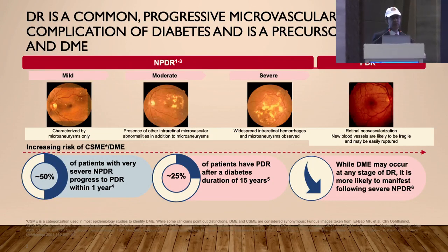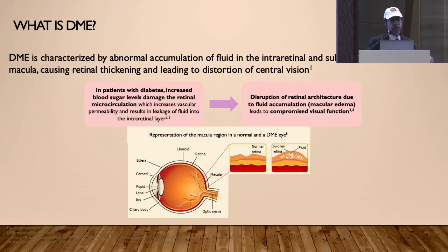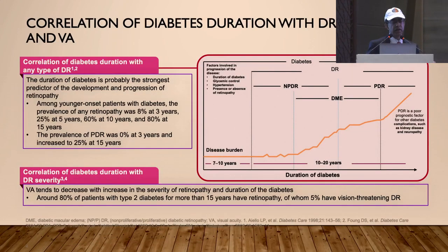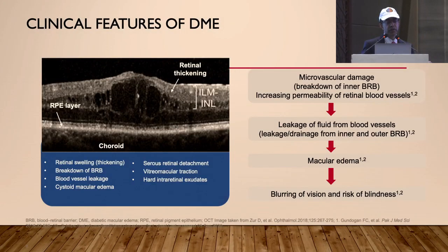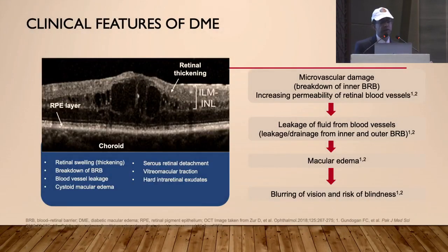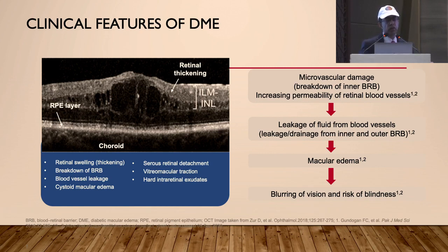DR is a common progressive microvascular complication. DME is characterized by abnormal accumulation of fluid in the intra-retinal and sub-retinal space. It has a correlation with the duration and severity and visual acuity. There is microvascular damage due to breakdown of the inner blood-retinal barrier, which causes leakage of fluid and macular edema, hence the importance of VEGF and using anti-VEGF agents.